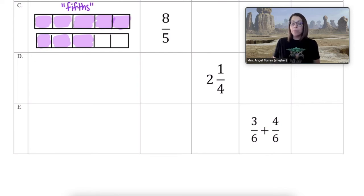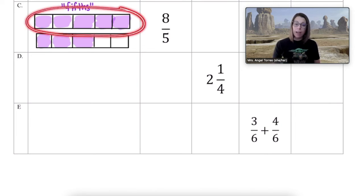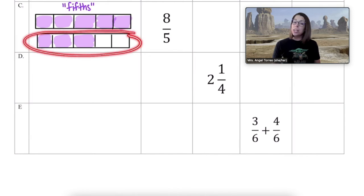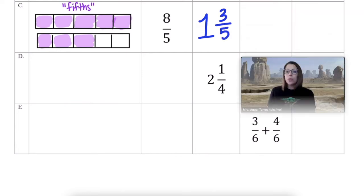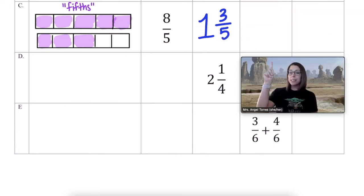Now that we have our diagram, we can figure out our mixed number. How many whole bars are filled in? I just see this top bar where I have all five fifths filled in. And then in the bottom diagram, I have three fifths left over. So as a mixed number, I have one whole and three fifths left over. Go ahead now and try to figure out a sum for the total number of fifths and a difference for the total number of fifths on your own.